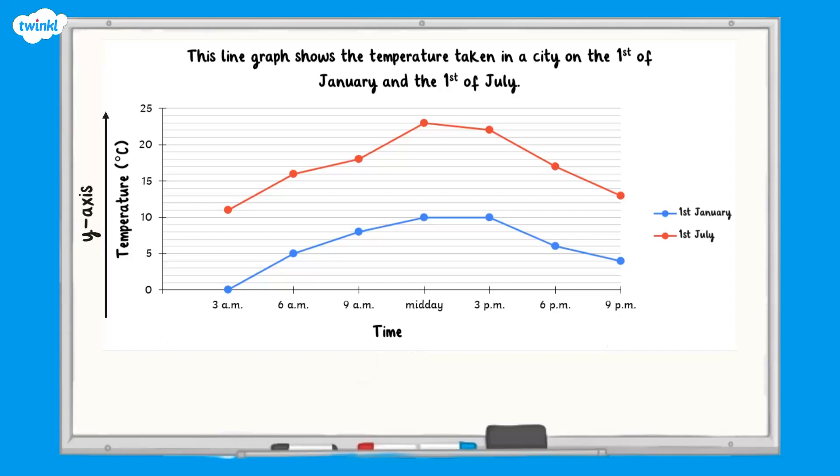The vertical axis, or y-axis, goes from top to bottom at the left of the graph. On this graph, it tells us the temperature that was recorded in degrees Celsius. It is labelled in steps of 5 degrees, starting at 0 degrees and finishing at 25 degrees.